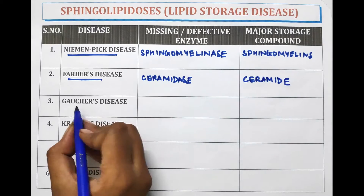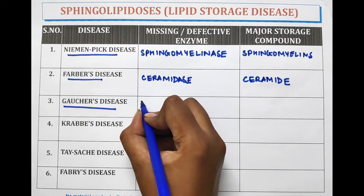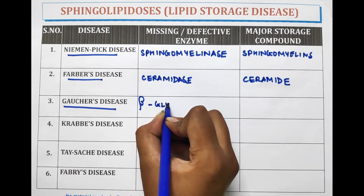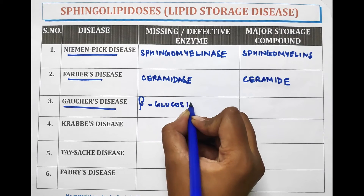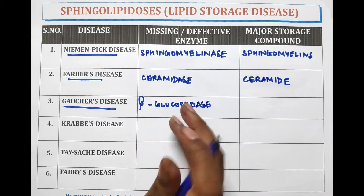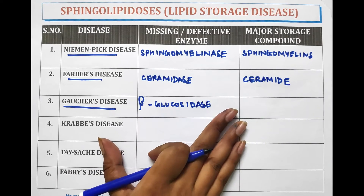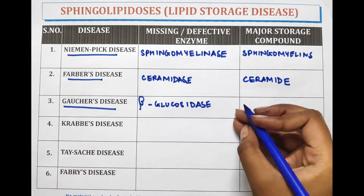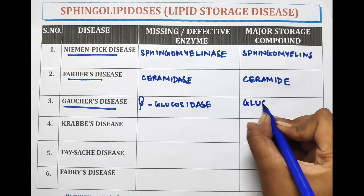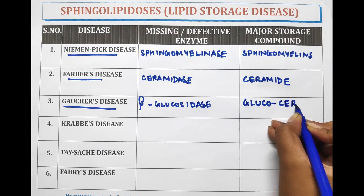Another disease is Gaucher's disease, which is caused by the deficiency or defect in the enzyme Beta-Glucosidase. Beta-Glucosidase is responsible for Gaucher's disease, and the major storage compound is Glucocerebroside.